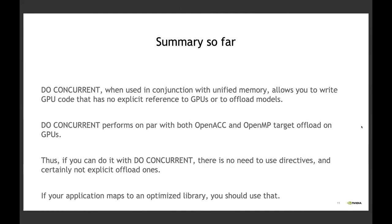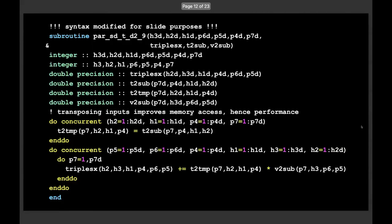Summary so far: do concurrent works as well as the directive models if you can do it, which in this case you can. It is very important to have unified memory — if you don't, you have to do all the memory management. If you're using a GPU that doesn't support unified memory, you have a different story. But we support unified memory and it makes things a lot easier.